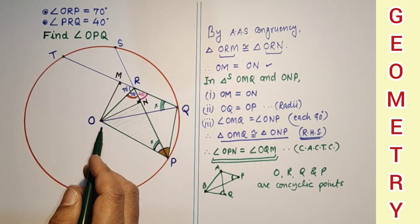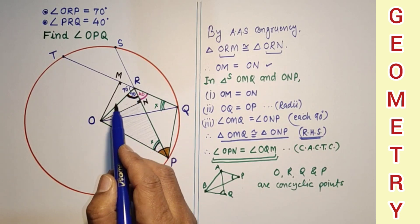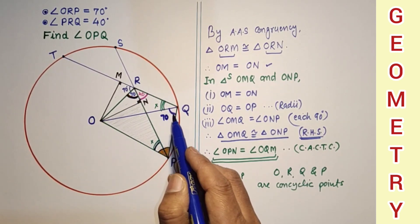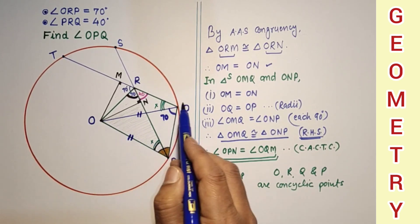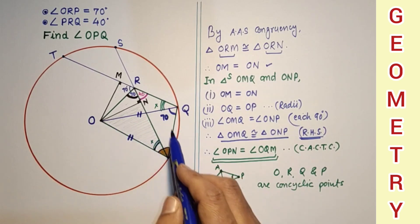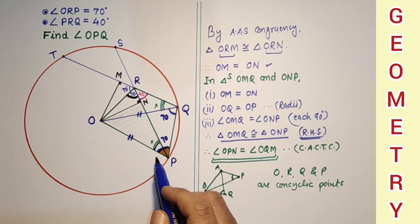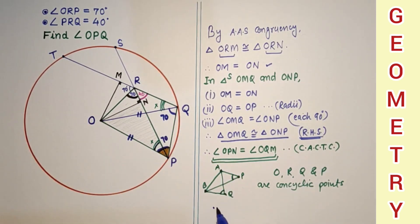So taking this chord OP, OP is subtending 70 degrees here, so this angle will also be 70. And because these two are equal, OQ is equal to OP, so it is an isosceles triangle, so this angle will be 70. We found that angle OPQ is equal to 70 degrees. Angle OPQ is equal to 70 degrees, and this is the answer.